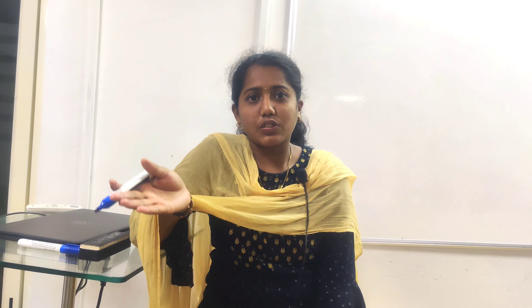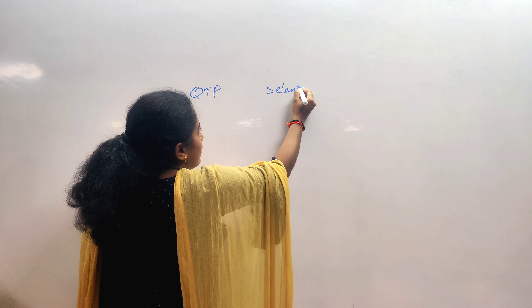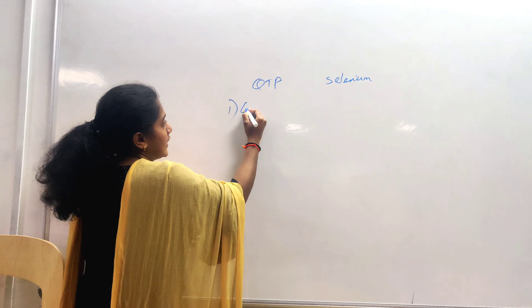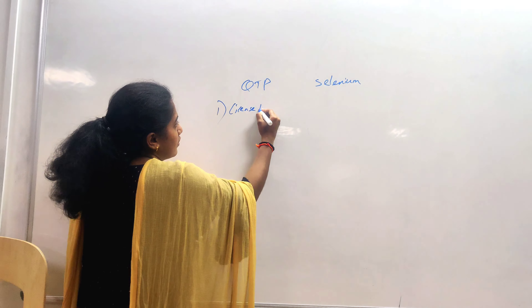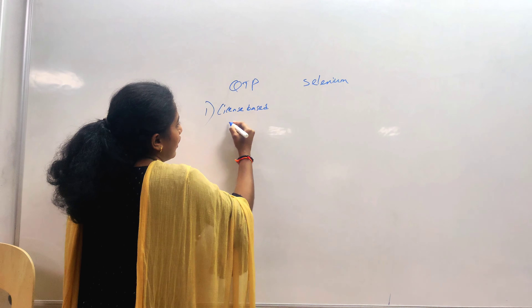There are two popular automation tools present in automation testing: QTP and Selenium. QTP stands for Quick Test Professional, and it uses VB Scripting, which is known as Visual Basic scripting. It is used to automate applications. When it comes to Selenium, it uses programming languages like Java, Python, etc.